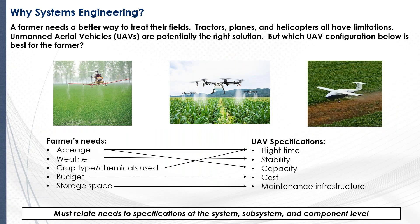In addition, you need to know how those things are related. For example, if the farmer needs a certain amount of acreage coverage, we need to know what that means in terms of flight time and capacity for the UAV spec. Depending on the chemicals — how many, how heavy — that would go to capacity and probably flight time. Budget clearly goes to cost, and storage space ties to maintenance.